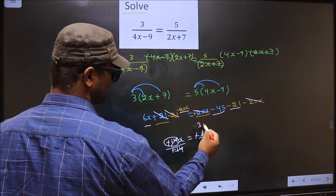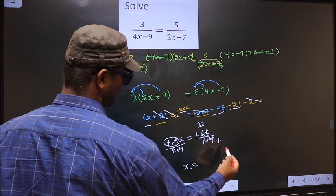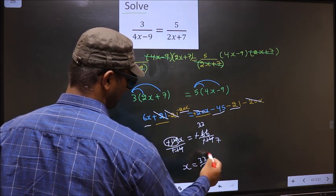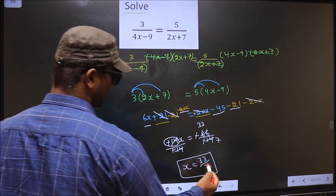2, 3, 6... 2, 3, 6... and here 2, 7 is 14. So we got 33 by 7. This is our answer.